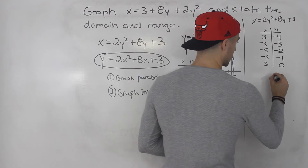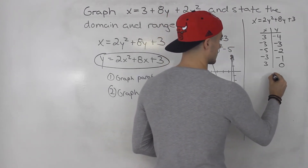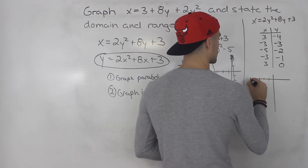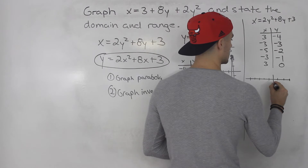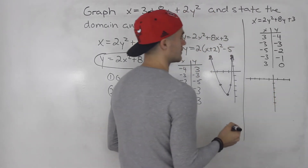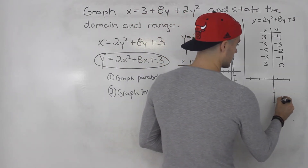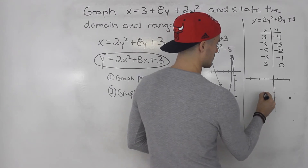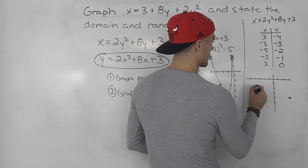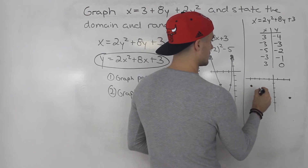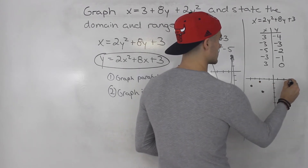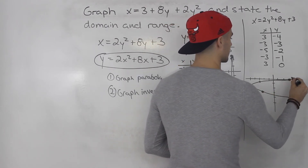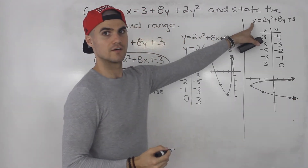We can now graph this inverse. Setting up axes — note that the y values are all negative. We plot: 3 and negative 4 over here; negative 3 and negative 3 here; negative 5 and negative 2 here; negative 3 and negative 1 here; and 3 and 0 here. Graphing this out gives a sideways parabola. That is the graph of x equals 2y squared plus 8y plus 3.